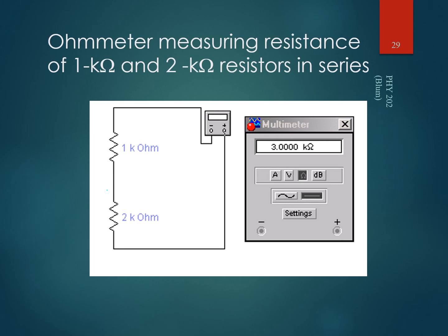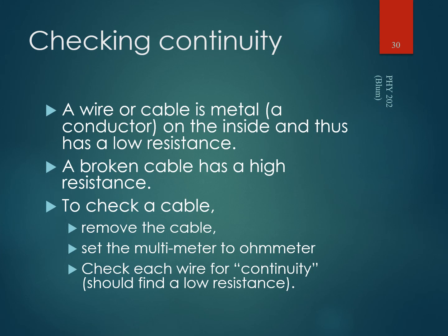When using a multimeter as an ohmmeter to measure resistance, it's important to remove the component from any circuit so the only source of power is the ohmmeter itself. This gives us a way to test continuity: a cable is a conductor and should have low resistance, but a broken cable has an insulator or air gap and will have high resistance. We remove the cable from any circuit, set the multimeter as an ohmmeter, measure resistance, and a low reading confirms continuity; a high reading indicates a broken cable.